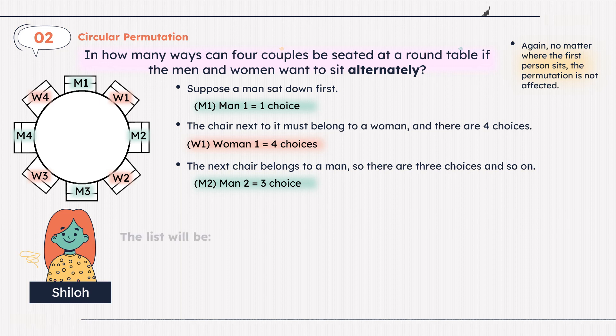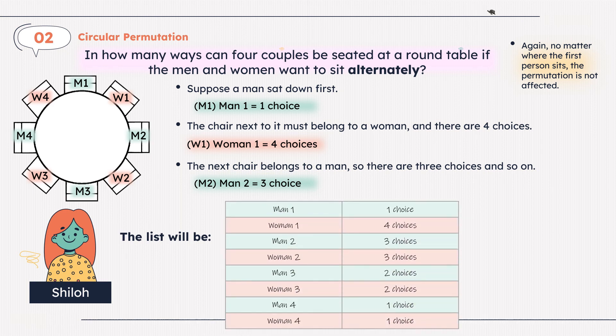It is easier to do it as a list as shown. Start from man 1, woman 1, man 2, woman 2, and continue until all the men and women are listed. Multiply the choices and you will get 144 ways. So 4 couples, alternating men and women, can be seated at a round table in 144 ways.